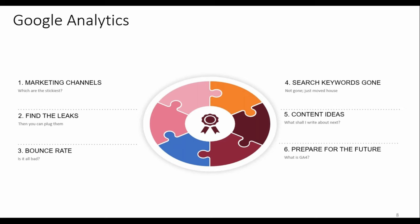We're going to look at: number one, marketing channels — which are the stickiest; number two, leaks — where does your website lose visitors; number three, bounce rate — is bounce always bad, because I don't think so; number four, search keywords — the keywords people put into Google before visiting your website, which left Google Analytics a while back and how to get them back; number five, content — inspiring you to write fresh content based on available data; and finally, the future — a thing called GA4.